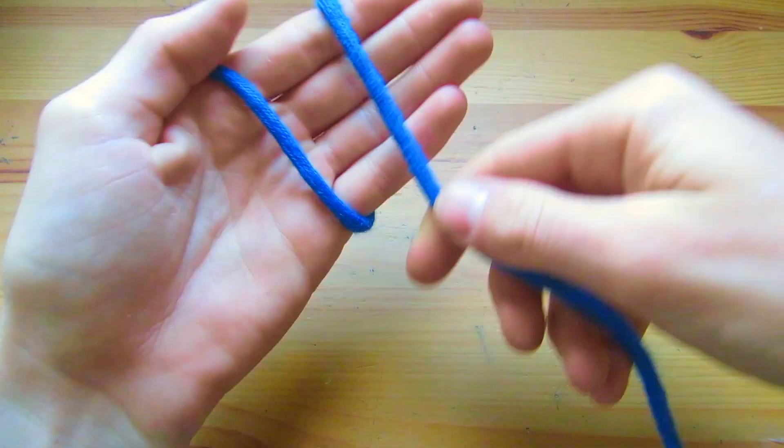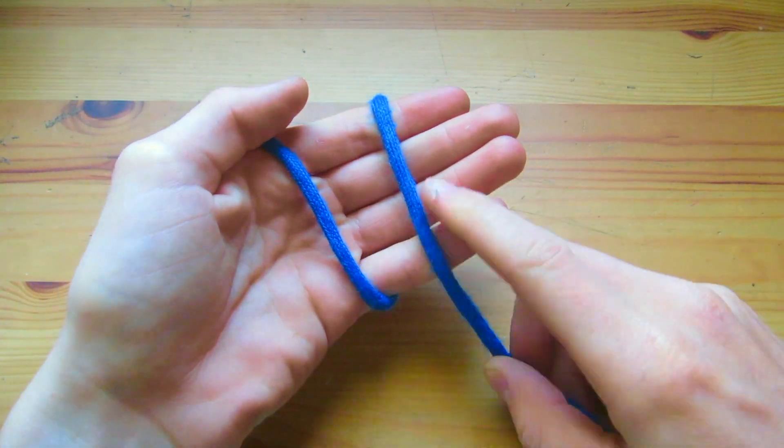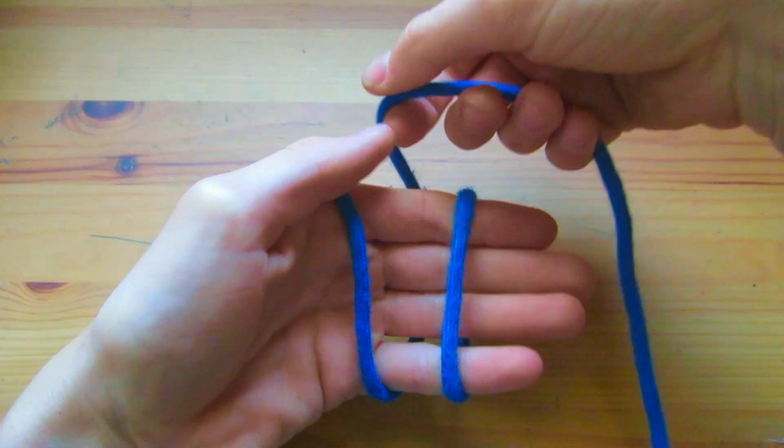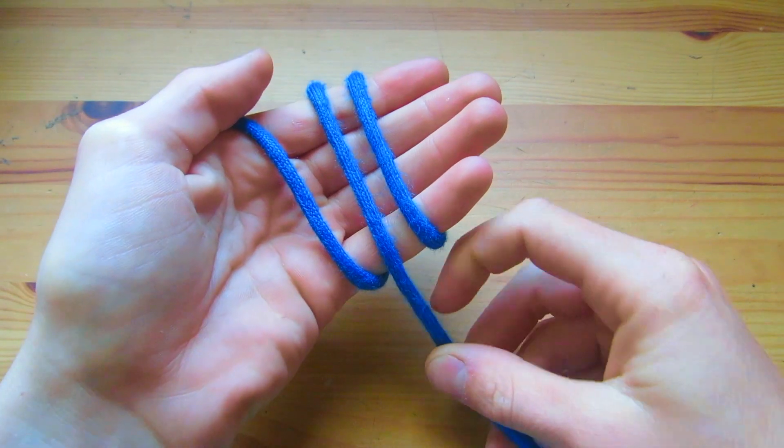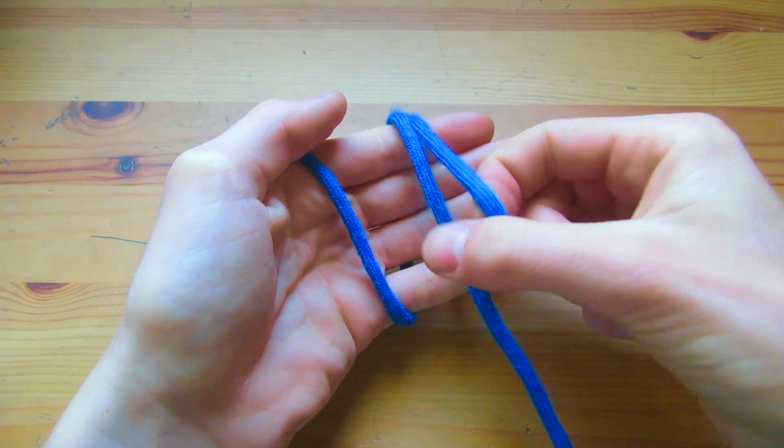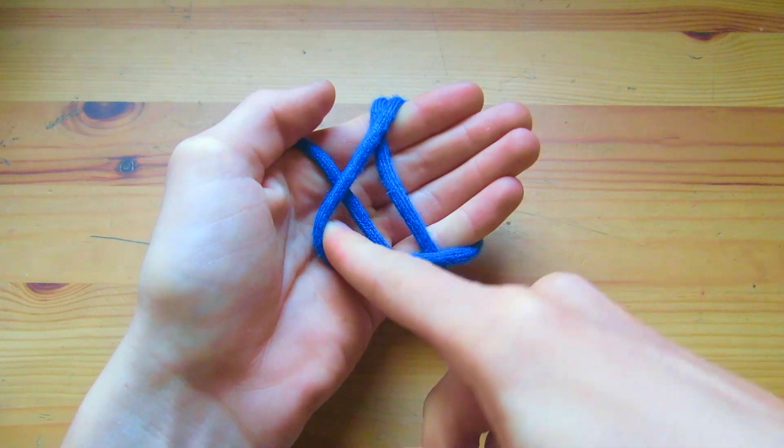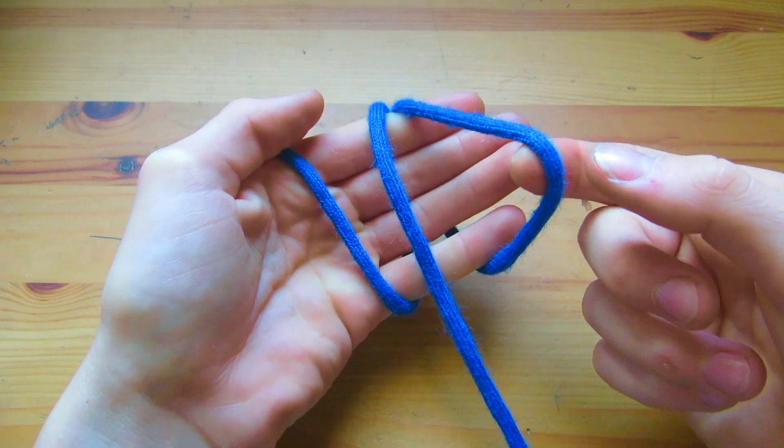I'm going to wrap it once around my hand. I'm going to leave a little room in between them. Wrap it around again in the middle. Then I'm going to grab this outside one, throw it over both of these two like that.